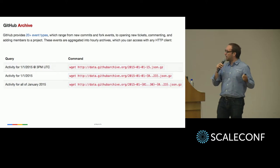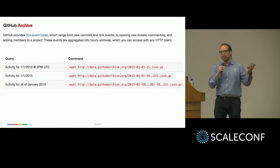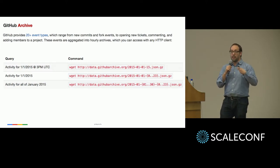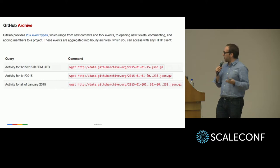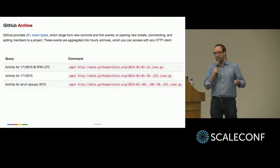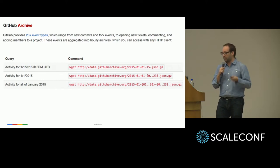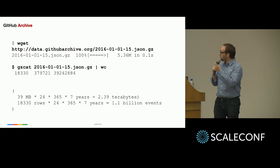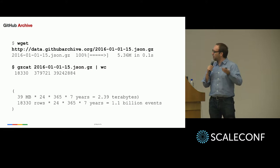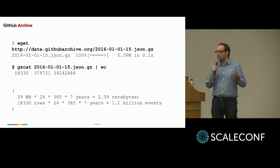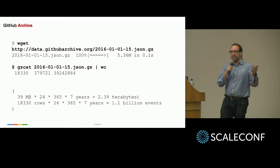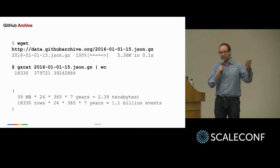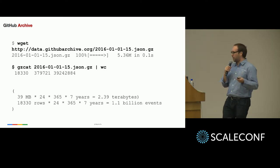He called it GitHub Archive and he left files which you could download at any time. For example, if you want to get one hour of events from GitHub, you just do a wget, a call request — five megabytes of data, less than a second. You can decompress it — that's like 30 megabytes of data per hour. That's super easy. Just download it, put it in a local database, get your results.